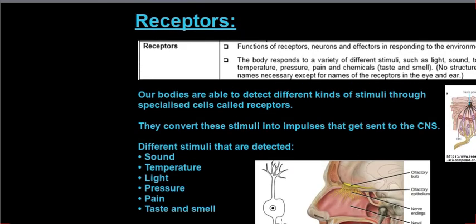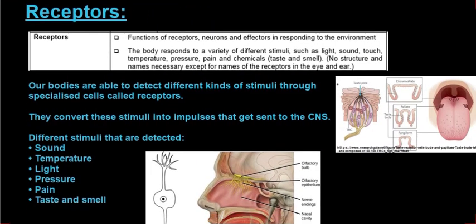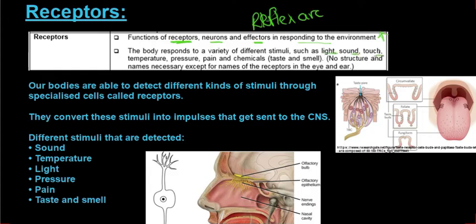Moving on and looking at receptors. You need to know the functions of receptors, the neurons, and the effectors in responding to the environment — we actually looked at this when we looked at the reflex arc. Our bodies are able to detect different kinds of stimuli through specialized cells called receptors. These cells detect stimuli and convert them into impulses that get sent to the central nervous system in order to trigger a response.